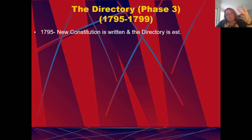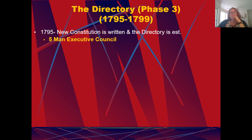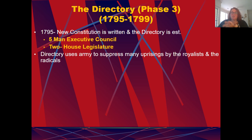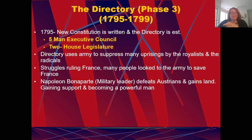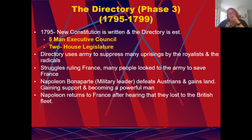Then you have phase three — this is the third constitution in about five years. A new constitution is written and the Directory is established: a five-man executive council and a two-house legislature. The Directory uses the army to suppress uprisings by royalists and radicals, but they struggle with ruling France. Many people look to the army to help save France, and this is where Napoleon Bonaparte, a military leader, defeats the Austrians and gains land. Because of this, he gains enormous support and becomes a very powerful man.